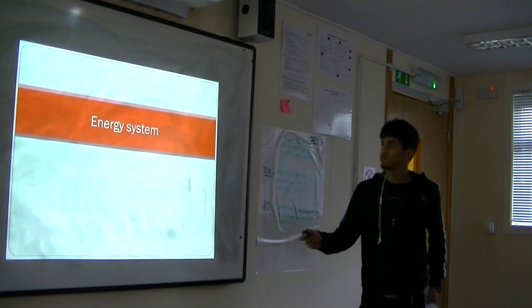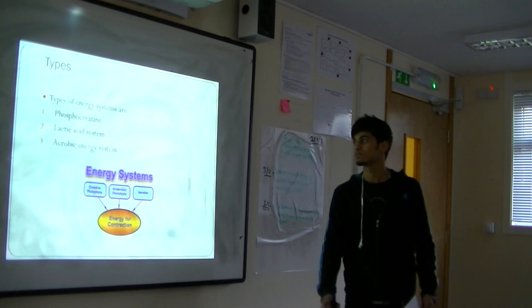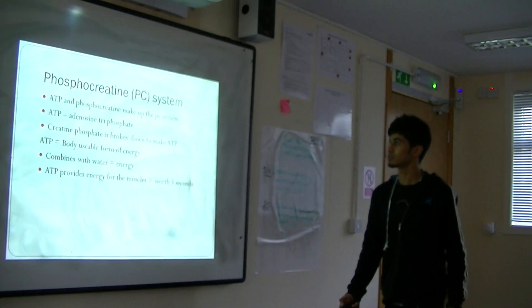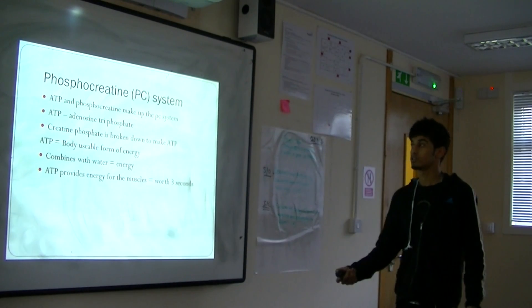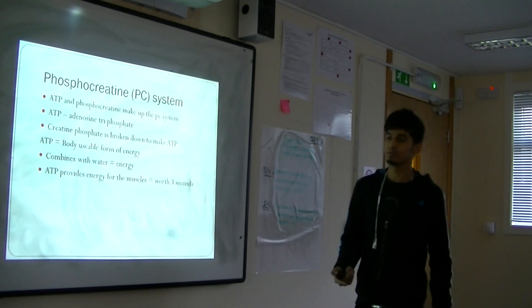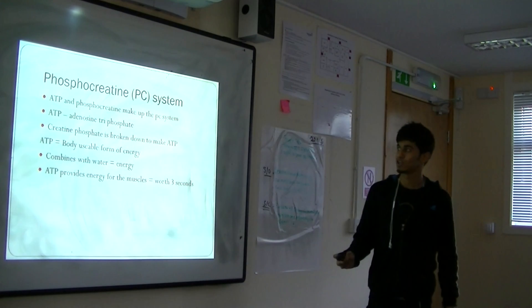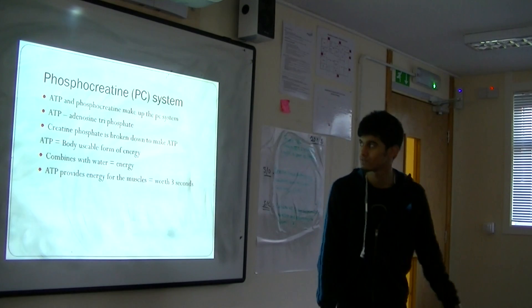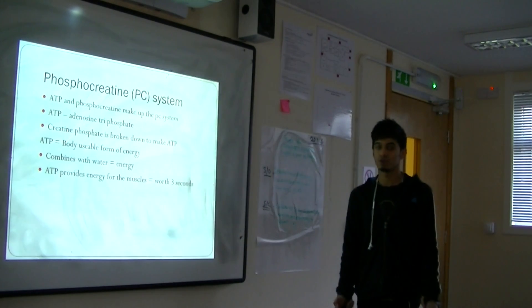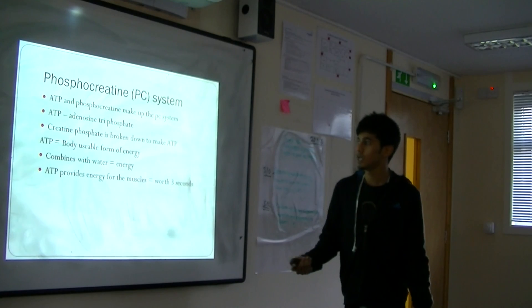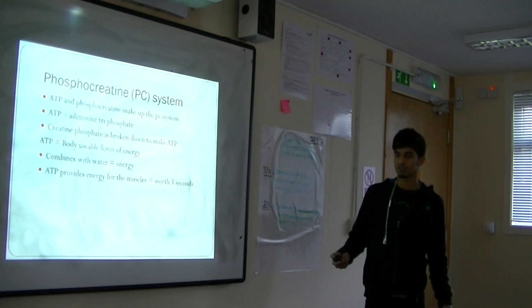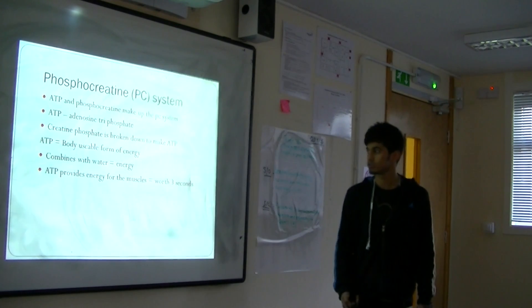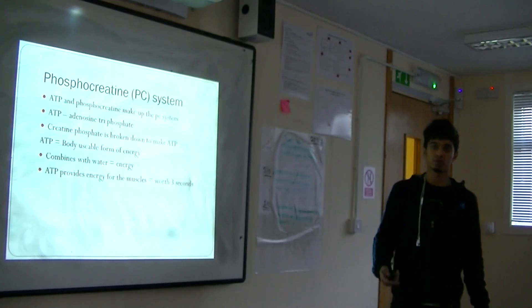Energy systems: we have three energy systems — phosphocreatine, lactic acid, and aerobic. The phosphocreatine (PC) system uses ATP and phosphocreatine. ATP stands for adenosine triphosphate. The creatine phosphate is broken down to produce ATP, which is basically usable energy for the body. It lasts only around three seconds, such as at the start of a 200 metres race.